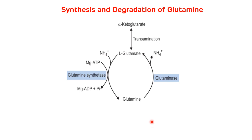Now, synthesis and degradation of glutamine. Glutamine is synthesized from glutamate with the help of the enzyme glutamine synthetase, and the amide group is donated with the help of ammonia, with utilization of one molecule of ATP. Degradation of glutamine is different from its synthesis — for degradation we require a different enzyme, glutaminase, which removes the amide group from glutamine in the form of ammonia and converts glutamine into glutamate.